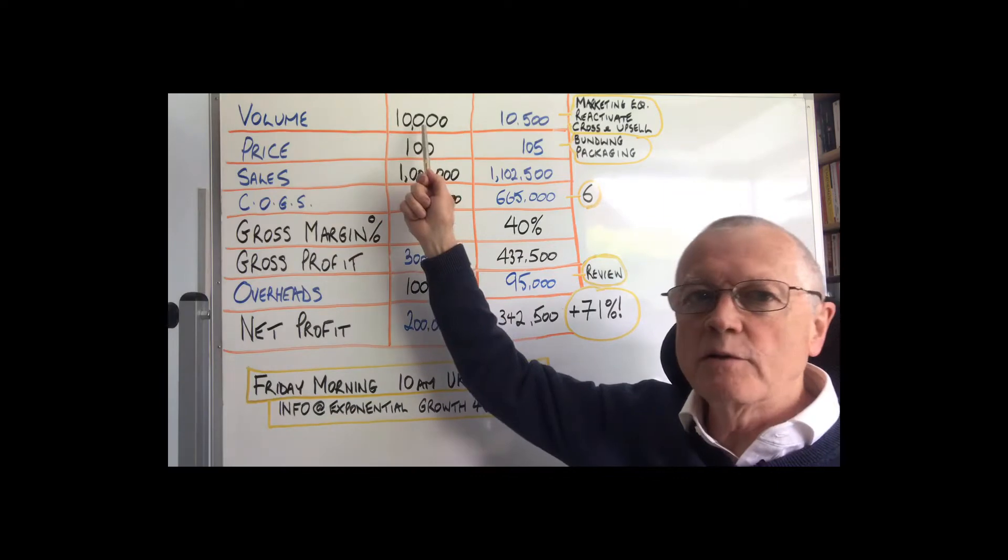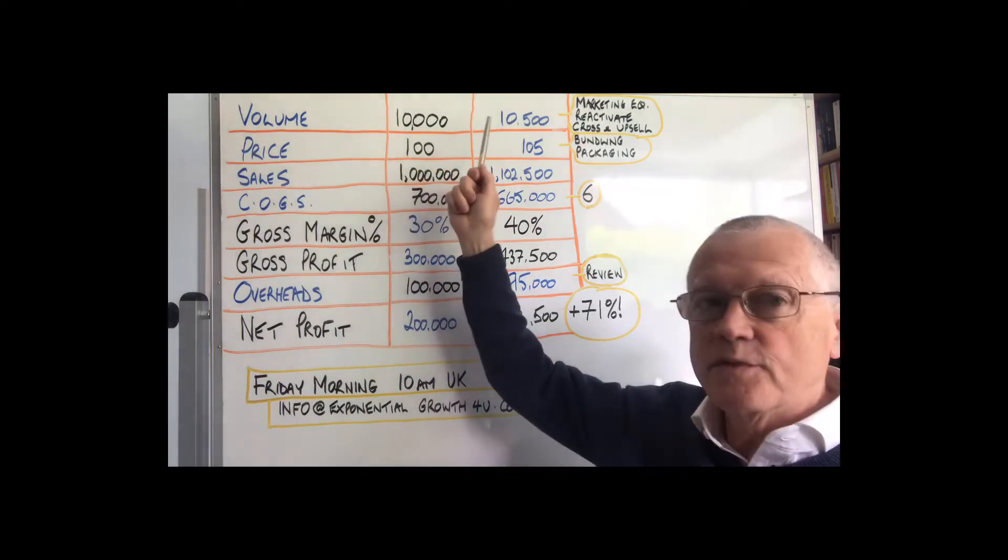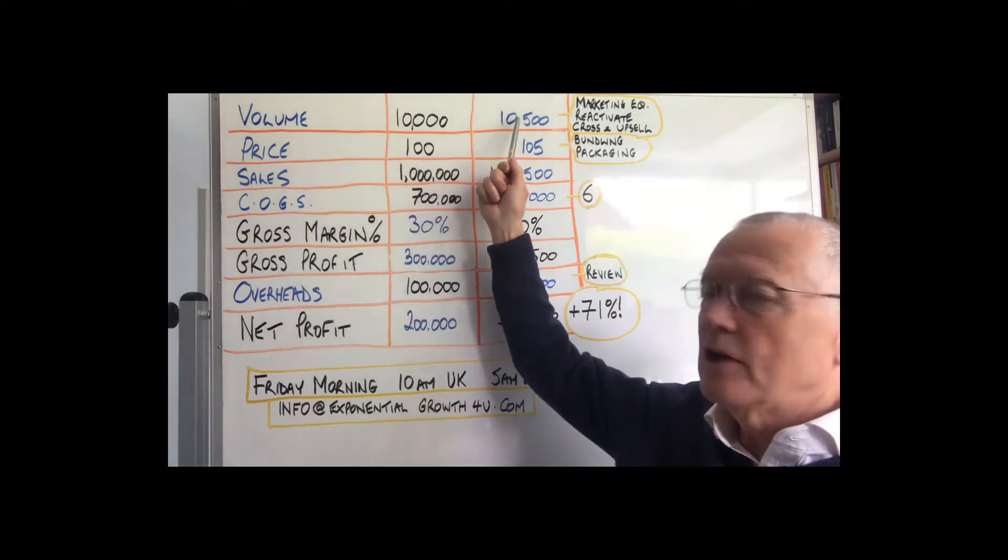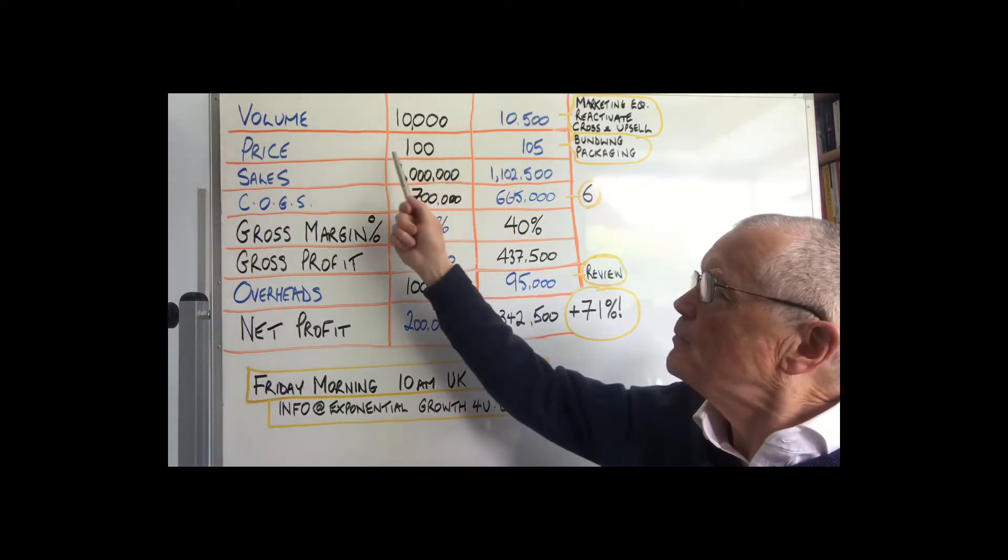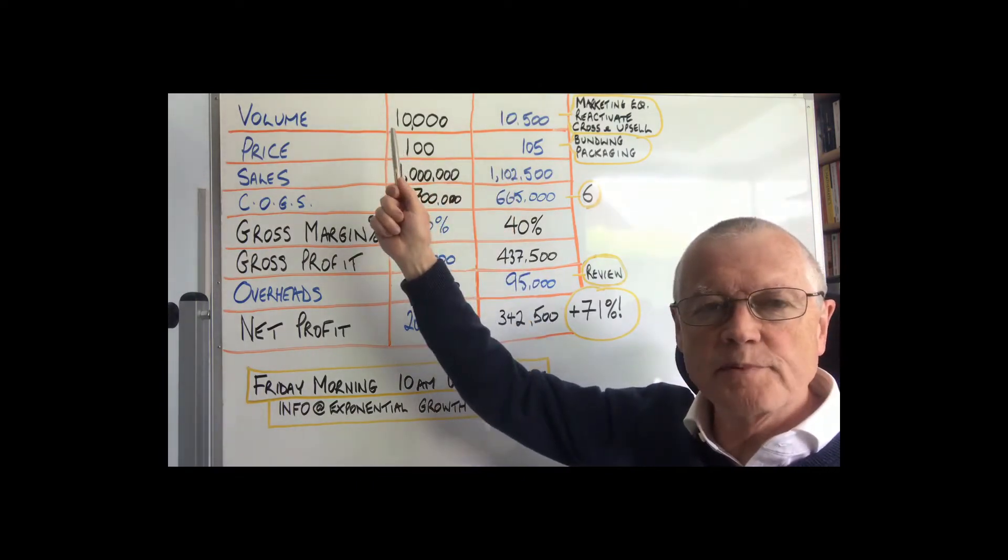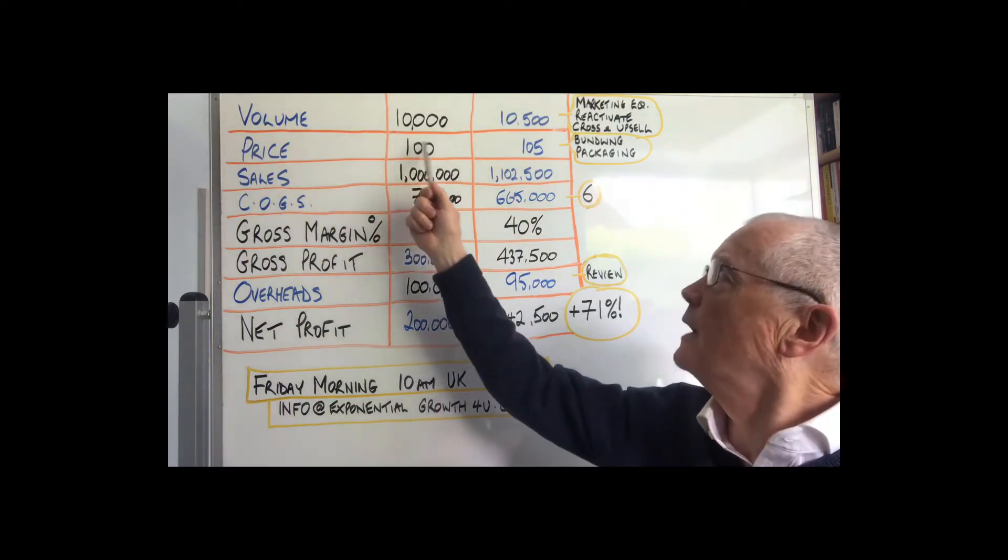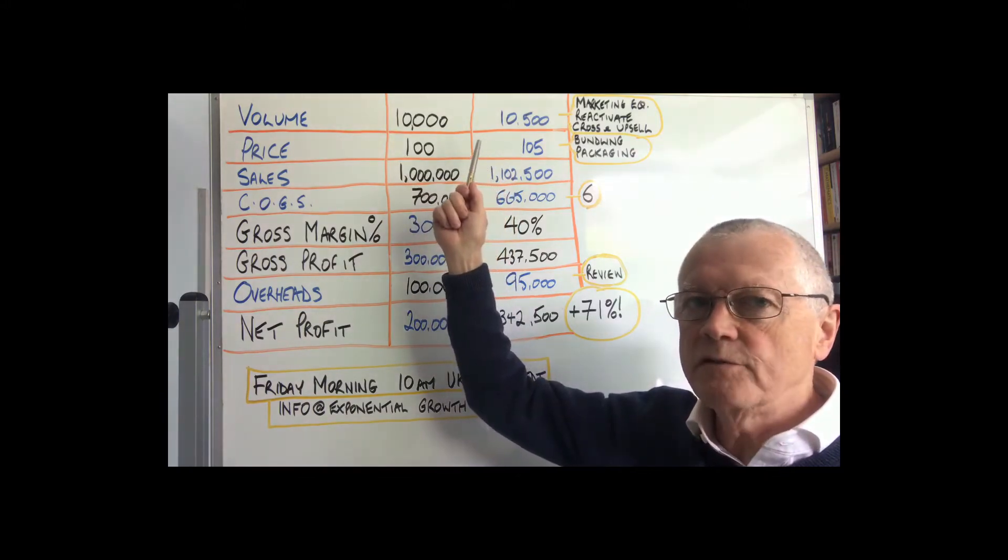So if we could sell 5% more, just 5% more, that would take our volume up to 10,500. And if we could receive an extra 5% on average on everything we sell, that would take our average price received up to 105.